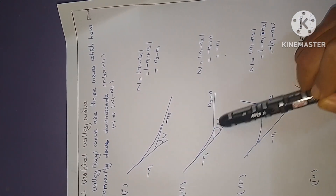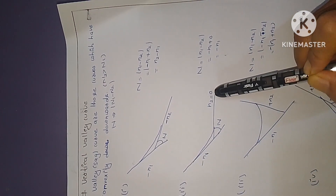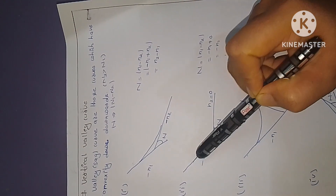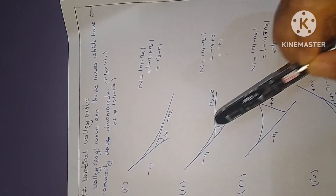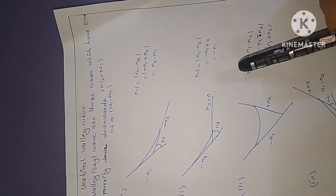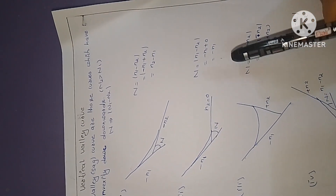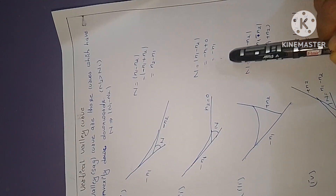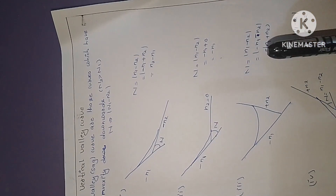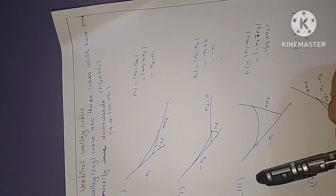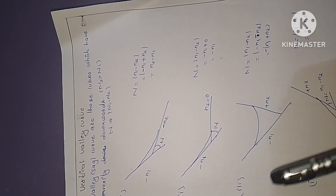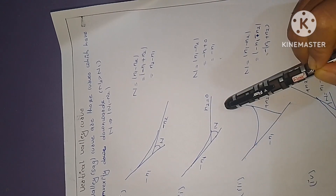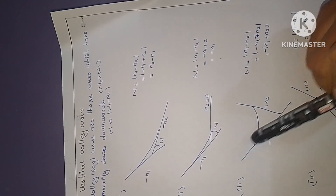The second case is when a downward grade meets a horizontal, meaning N2 is zero. The third case is when a downward grade meets an upward grade — that is, descending meets ascending order.